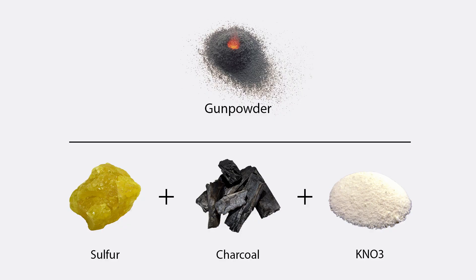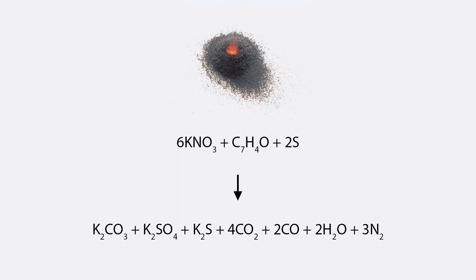The modern recipe for gunpowder is similar to the ancient Chinese recipe, usually containing potassium nitrate, charcoal, and sulfur in a 75 to 15 to 10 ratio by weight. The explosion of gunpowder releases a large amount of gaseous products, as summarized by the equation below.